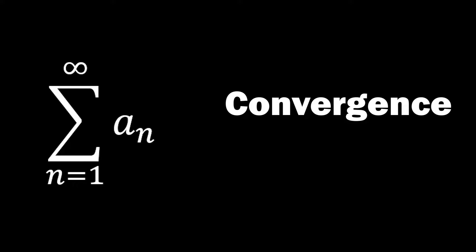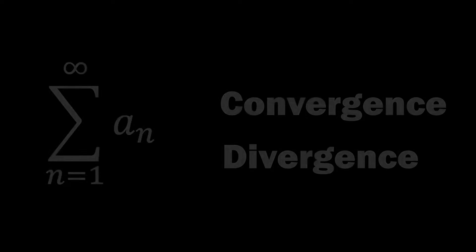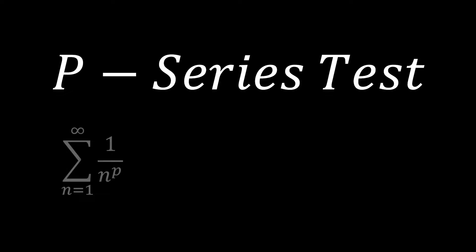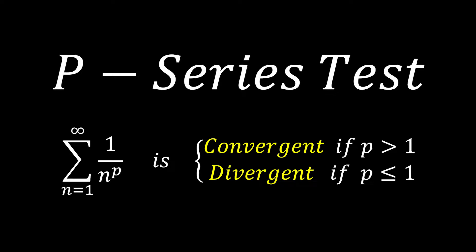Today, we'll learn how to determine the convergence and divergence of infinite series using the p-series test. The p-series test states that the sum of 1 over n to the power p, as n goes from 1 to infinity, converges if p is greater than 1, and diverges if p is less than or equal to 1.